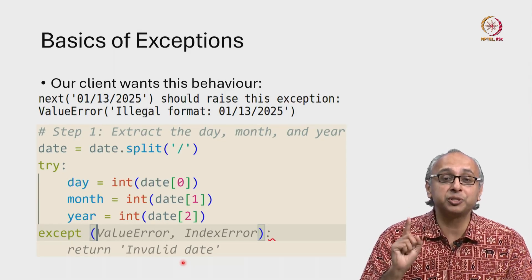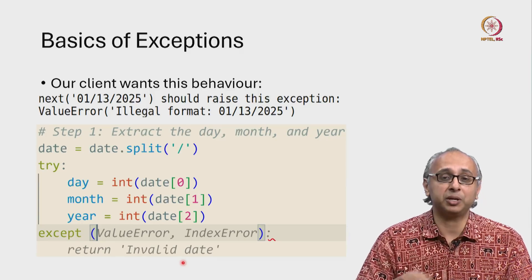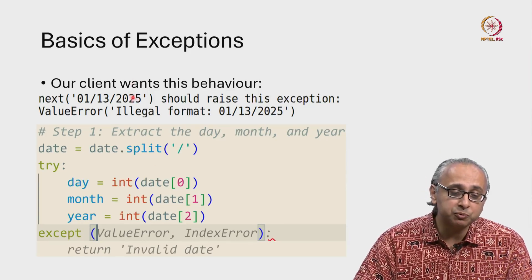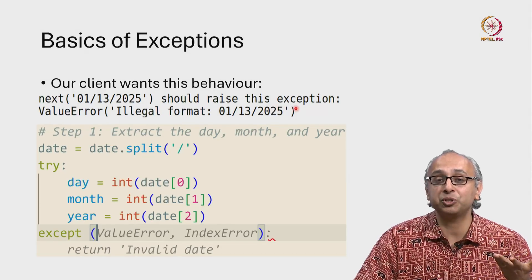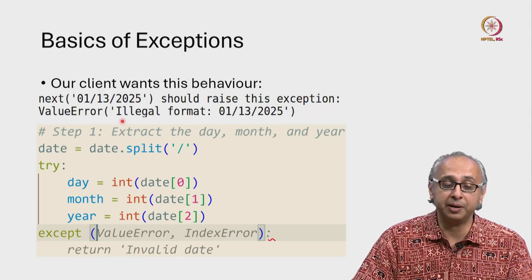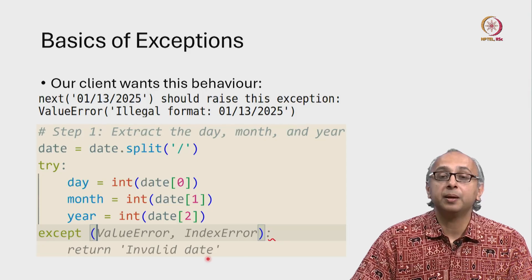Remember our function is always going to return a string. But this is not what our client wants. Our client doesn't want to return a string. Then they want to raise an exception, an exception called ValueError with this particular message.